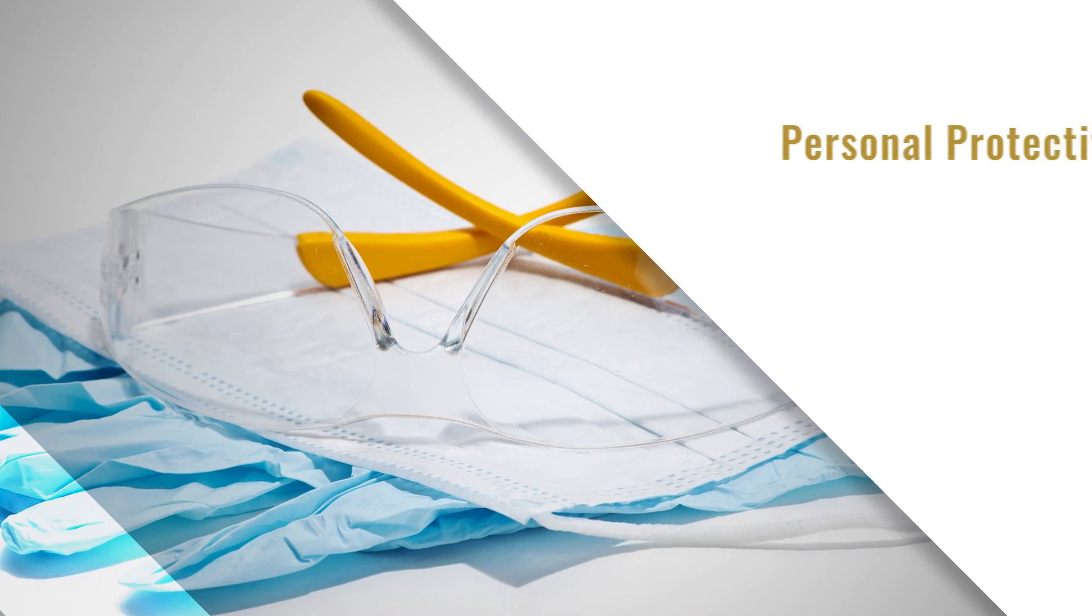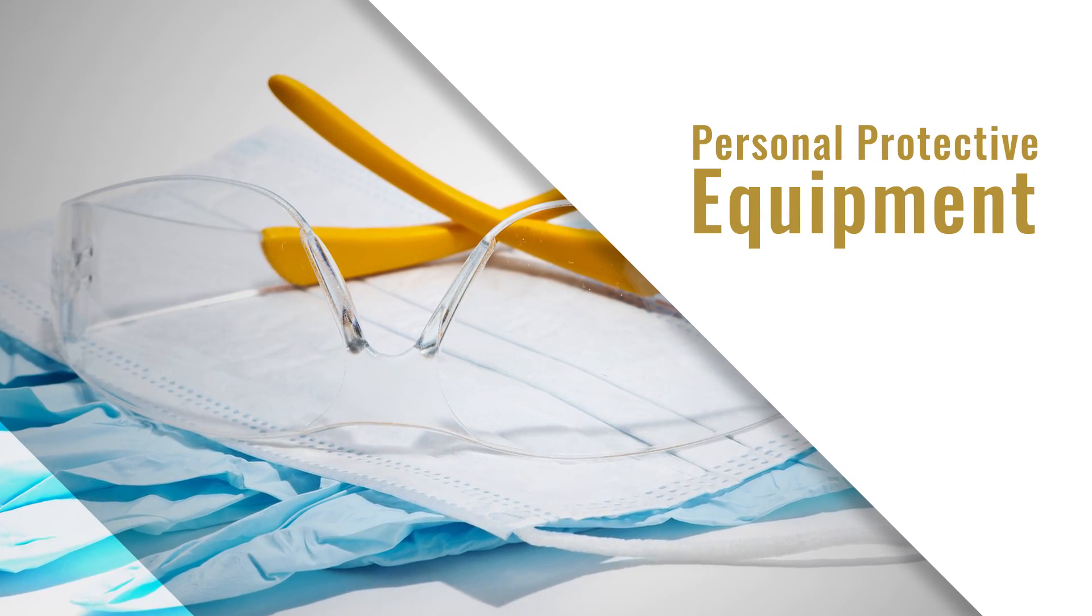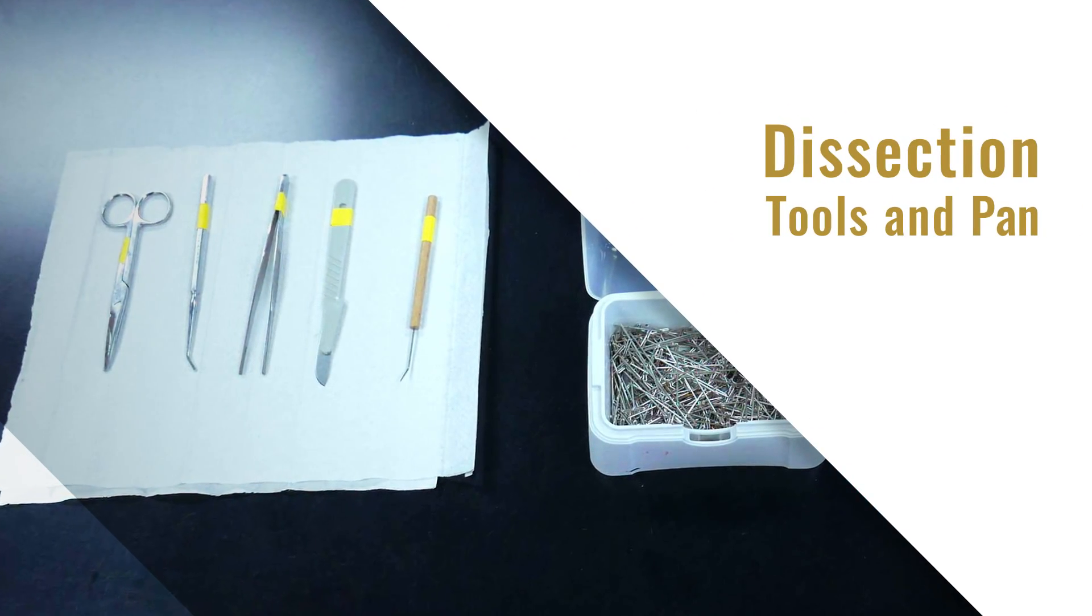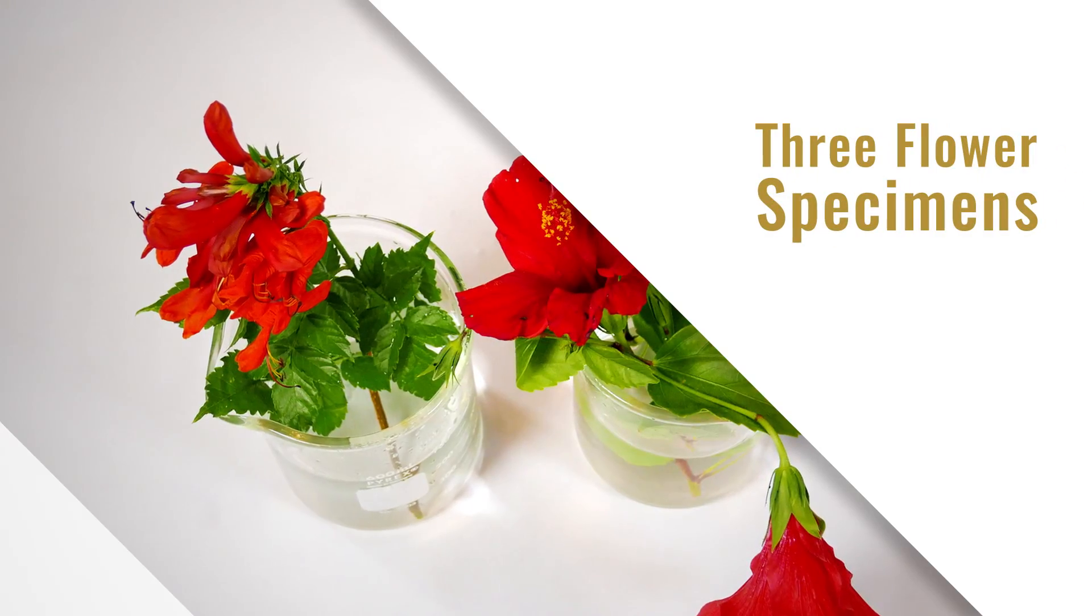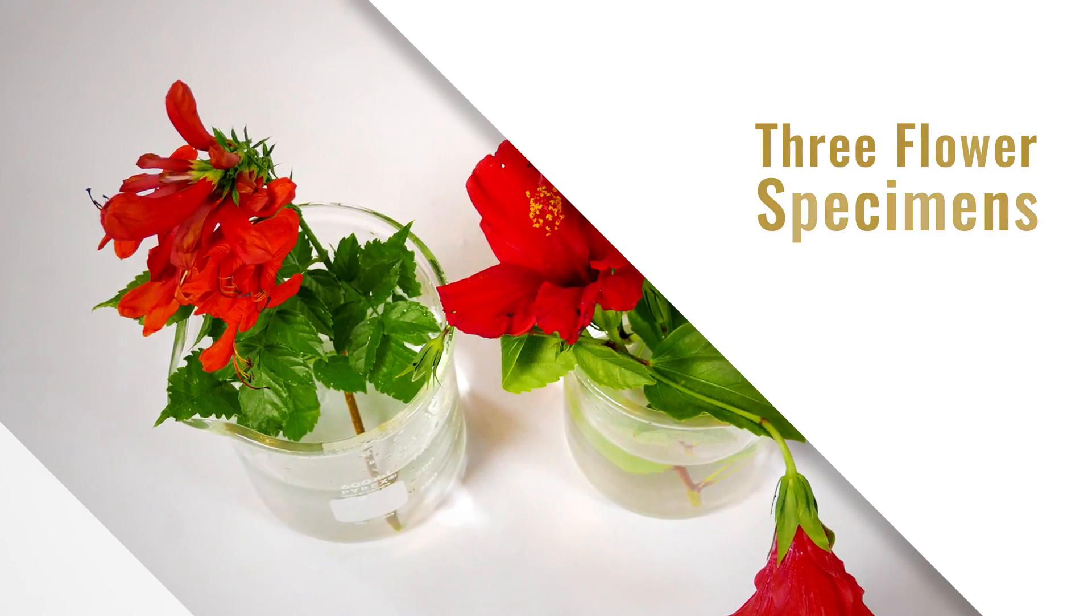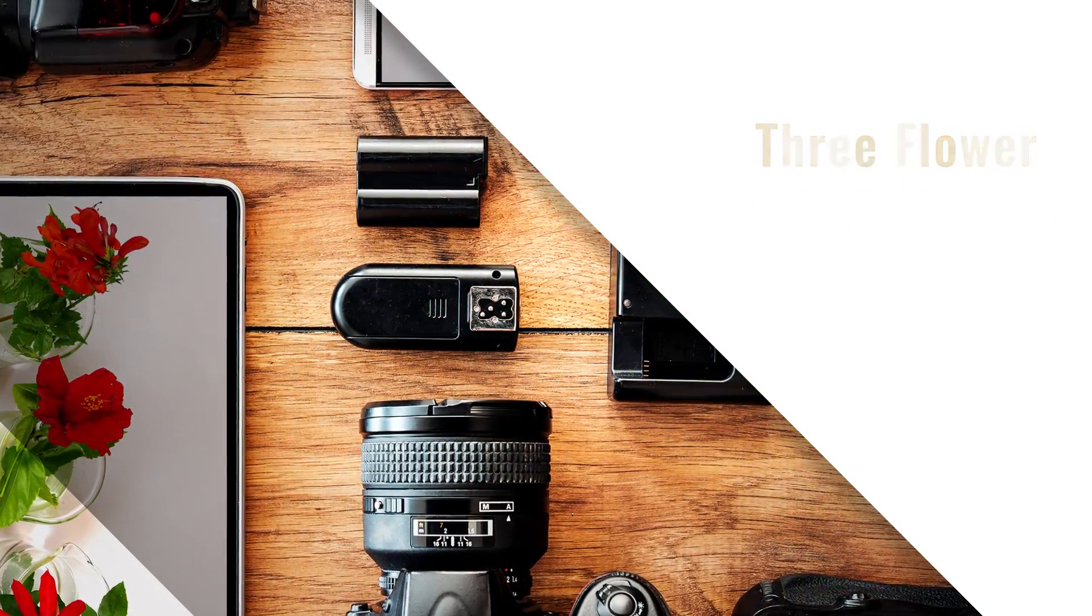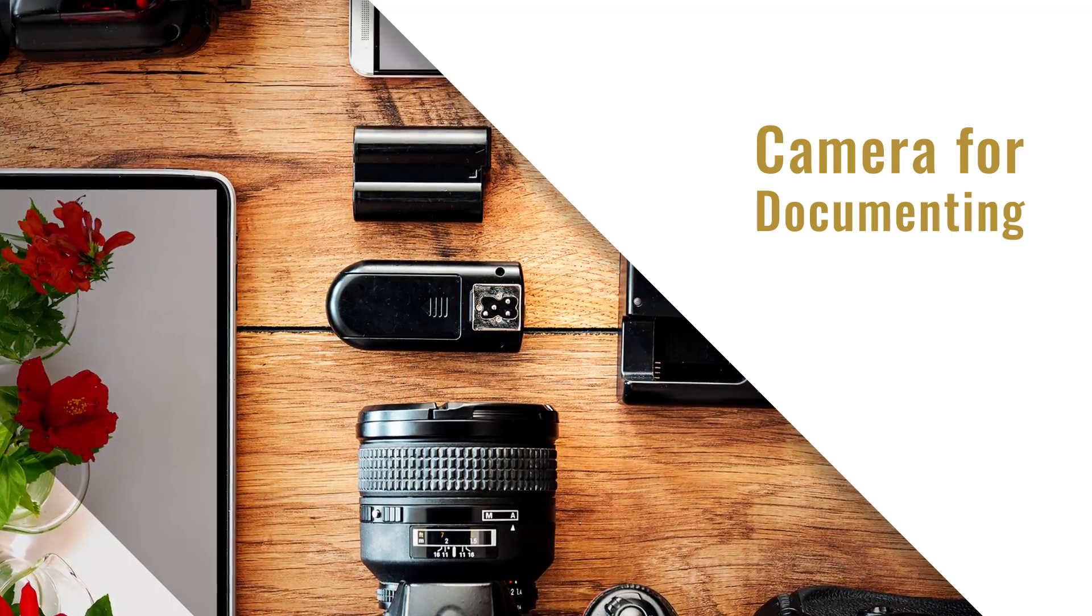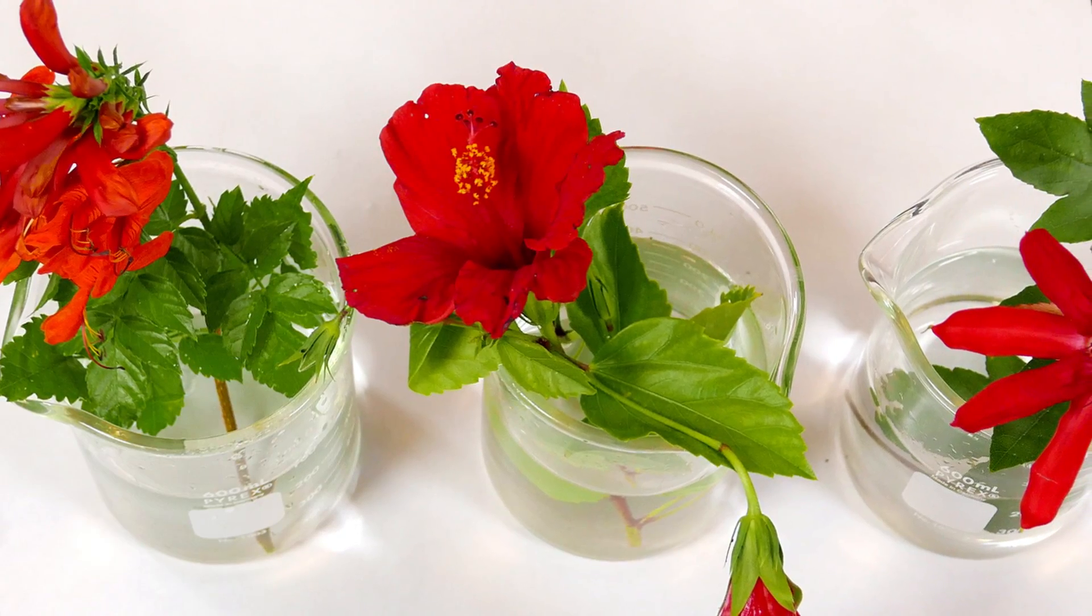To complete this lab you'll need the following materials: personal protective equipment, dissection tools and pan, three flower specimens that you've collected cut with an inch or two of stem remaining, and a camera for documenting your work.